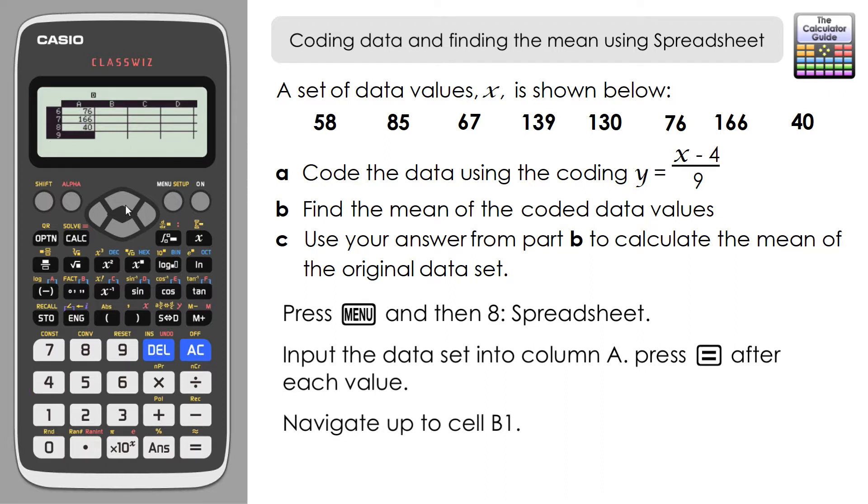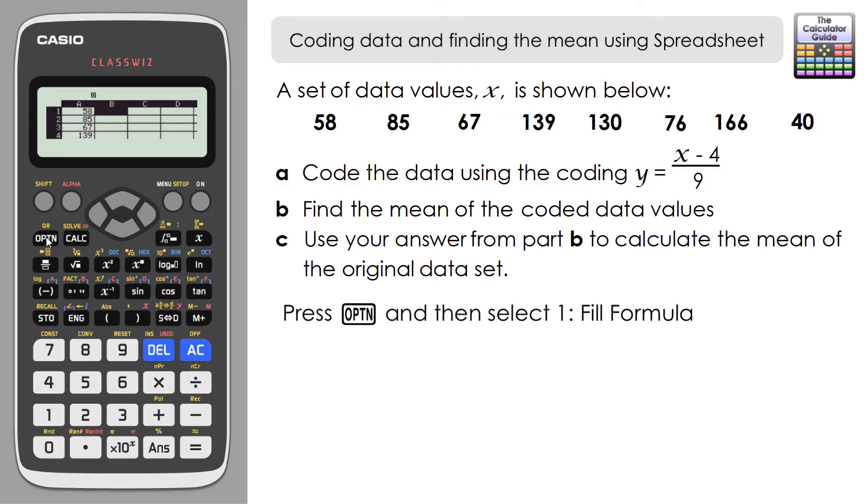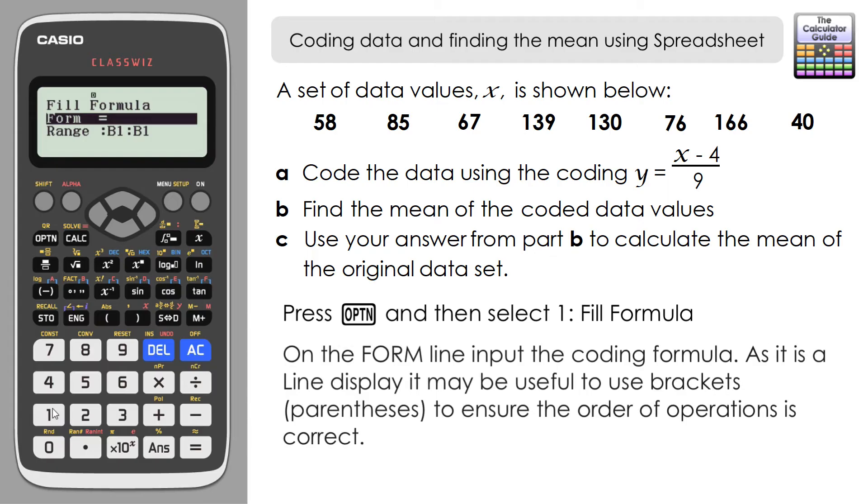This time, navigate to the second column, column B, where we're going to input the coded version of the data. We're going to use a formula to input the coded versions. Press option and then one for fill formula. On the top line after the equals, we need to input our formula.